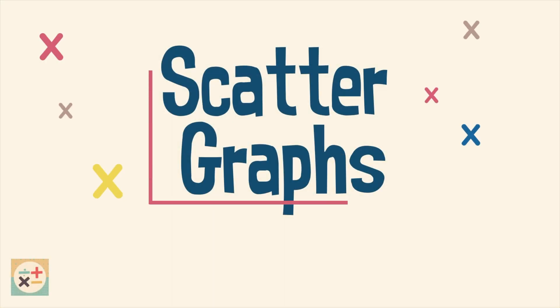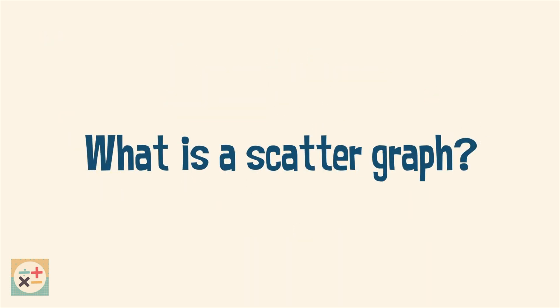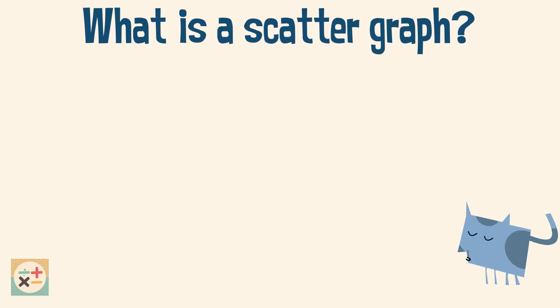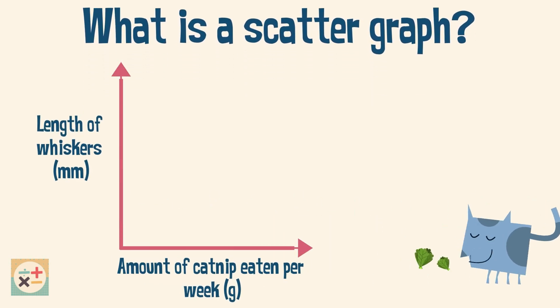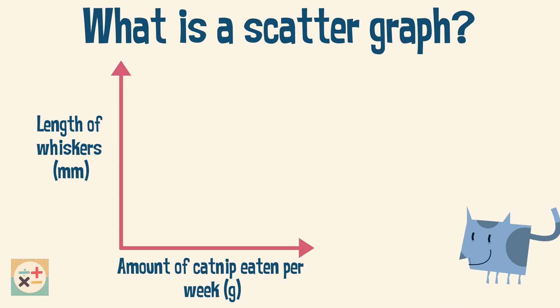Welcome to Minitee Maths. In this video we are going to explain what scatter graphs are and how to plot them. A scatter graph or scatter plot can show you the relationship between two sets of data. For example, it can show you if there is a relationship between the amount of catnip a cat eats and the length of its whiskers.